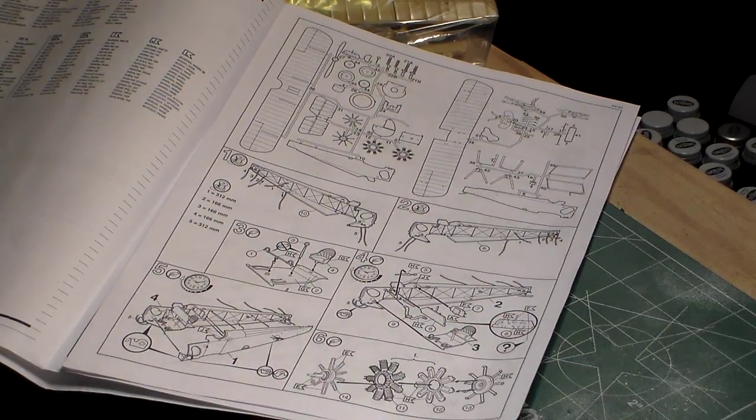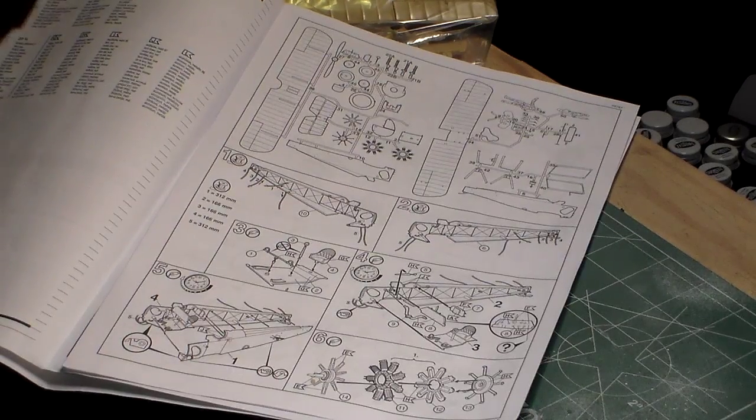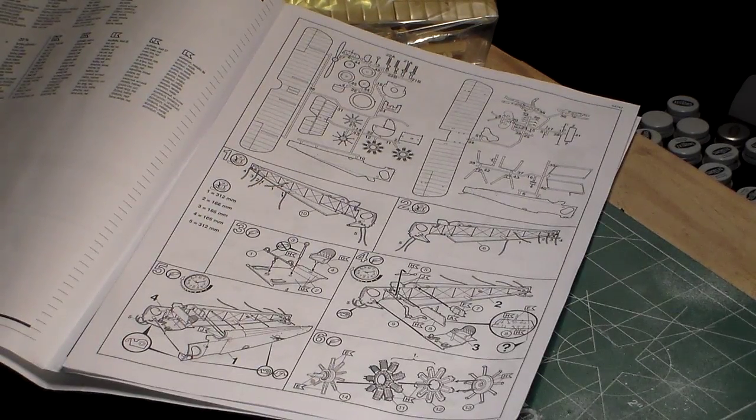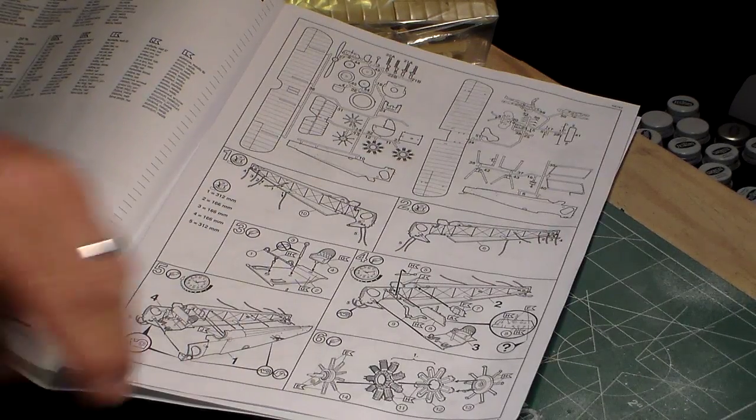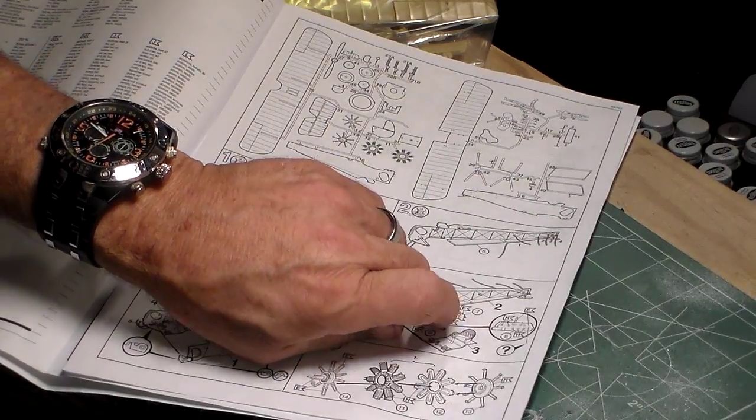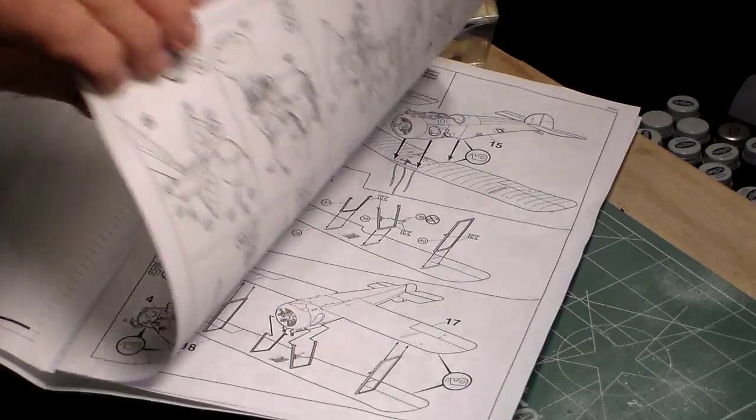You got your throttle quadrants, your oil pump here, and of course this is your rotary engine that the Camel used. It comes in, as you can see, four parts here. What's optional on this step - you can either use the decals or you can go ahead and paint them yourself by using the color callouts.